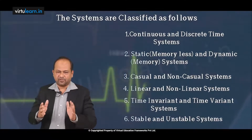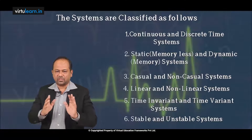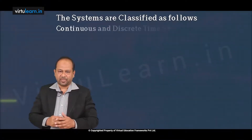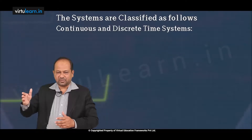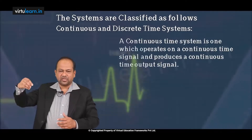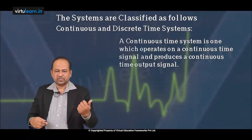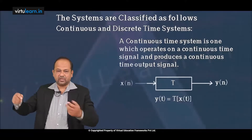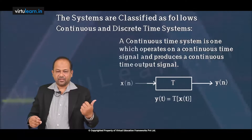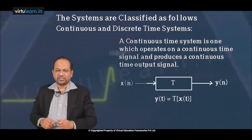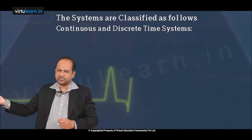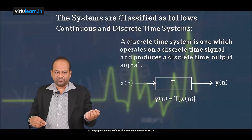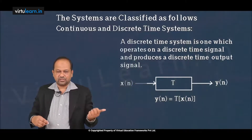Let us go through these systems one by one in short. First, continuous and discrete: a continuous system takes input as a continuous signal and gives output as a continuous value — that is continuous x of t and y of t. Whereas for a discrete system, it takes x of n as a discrete signal and gives the output as y of n. So this is a discrete system.